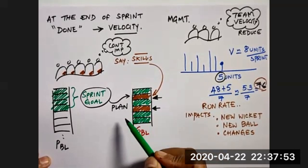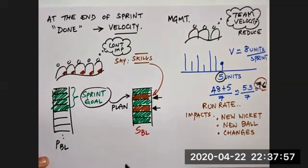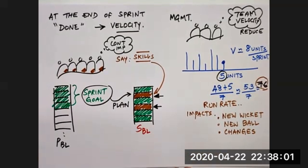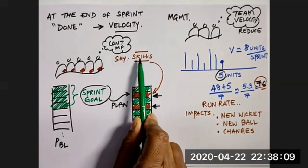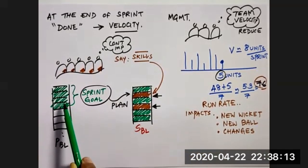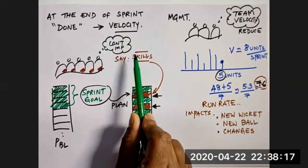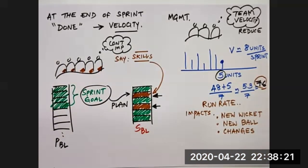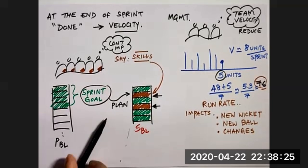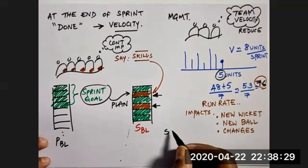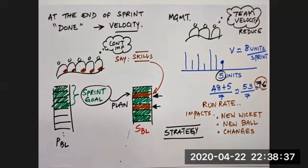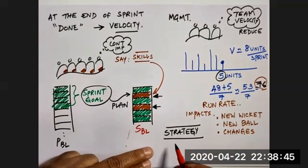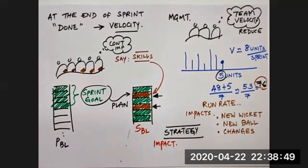The only problem is when the team works with a customer who expects billing per hour, and the customer says they are not paying for skill improvement but for functionality. In such cases, the team's continuous improvement becomes part of the management's investment to improve the team. How you handle the situation depends on the strategy of the team and management — a wrong strategy could result in the team being stressed.